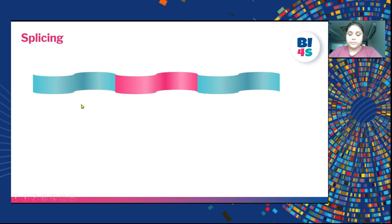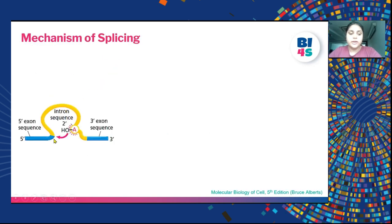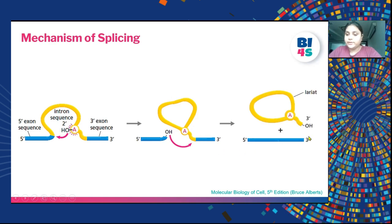For splicing, imagine two blue ribbons and one pink ribbon glued together, and you want to remove the pink ribbon and join the two blue ones. You cut the pink ribbon out and glue the blue ribbons together. Similarly, in splicing, the intron is cut out of the exonic sequences using molecular scissors, and the two exons are joined together while the intron is removed.